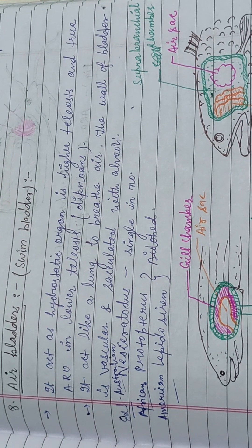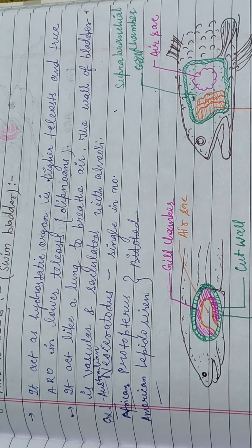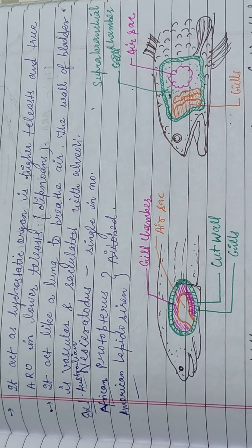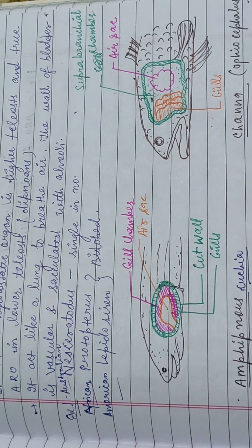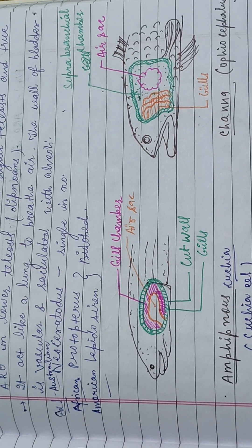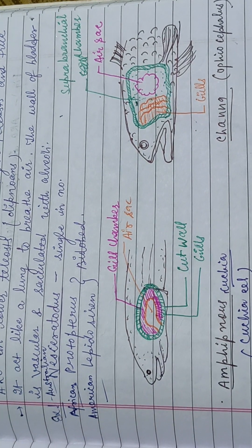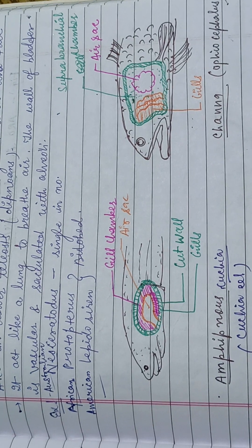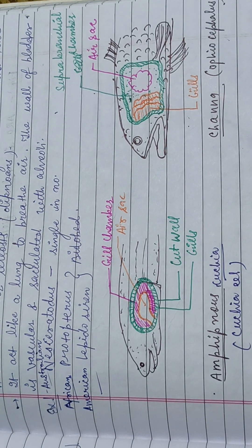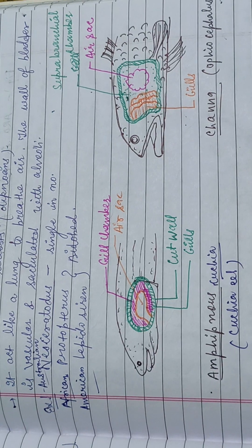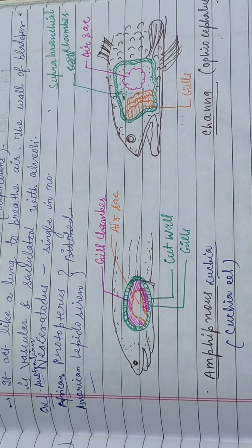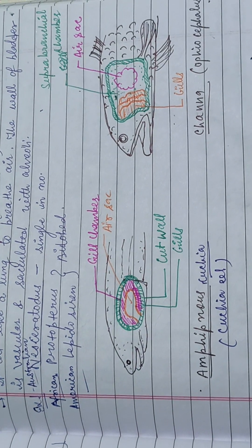Air bladder, also known as swim bladder, acts as a hydrostatic organ in higher teleosts and true ARO in lower teleosts. It acts like a lung to breathe air. The wall of the bladder is vascular and circulated with alveoli. Examples are the Australian lungfish also known as Neoceratodus, African lungfish Protopterus, and the American lungfish also known as Lepidosiren.